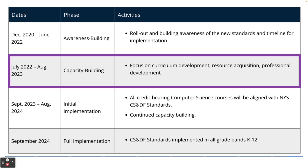As far as the rollout for these standards, we are in the capacity building stage that started in July of 2022 and runs through August of 2023. The idea is to focus on building curriculum, getting resources, and completing any professional learning needed. In September 2023, initial implementation begins where all credit-bearing computer science courses must be aligned to these standards. Full implementation in all grade bands K through 12 should be in place by September 2024.